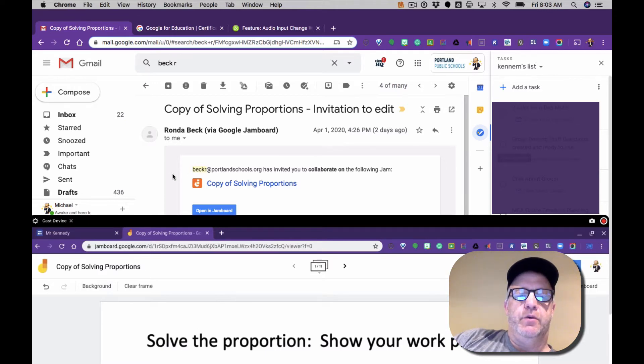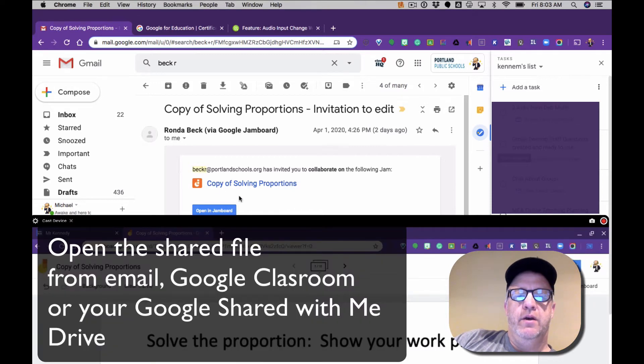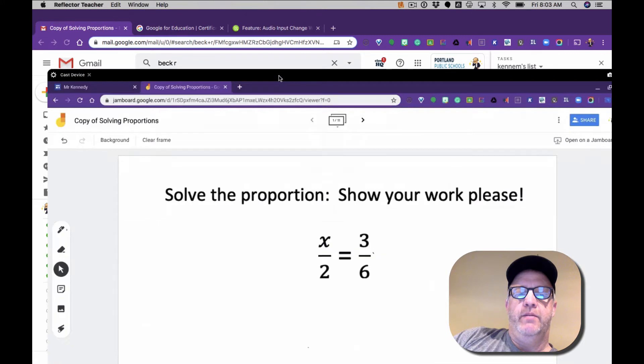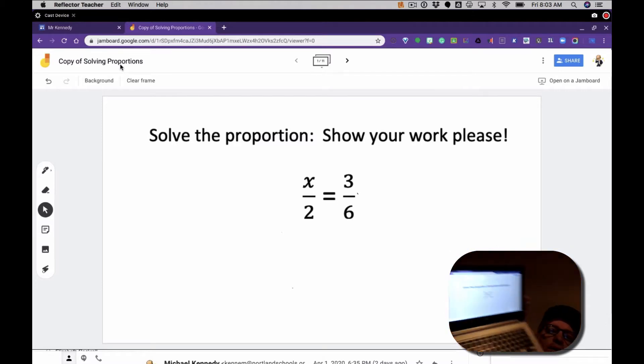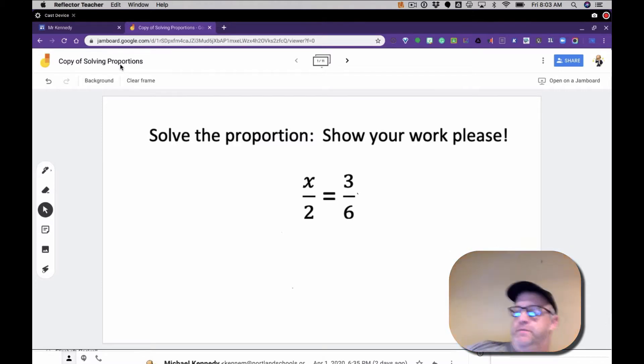So first thing we're going to do is open this email from Mrs. Beck and when we open that email we will get this here which is Jamboard - it looks like a D and it's orange at the top and you'll see it says copy of problem solving. Now so you know I am on a Chromebook and I'm making these adjustments.